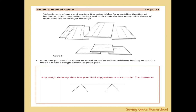For the practical part of this lesson, we'd like you to build a model table. Here's an example scenario: Valentia is in a hurry and needs to build extra tables for a wedding function. She can't afford conventional tables but has wide sheets of wood for tabletops. How can she use these sheets to make tables, and what designs are possible?